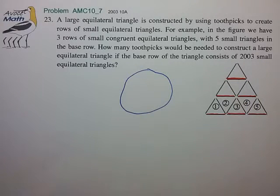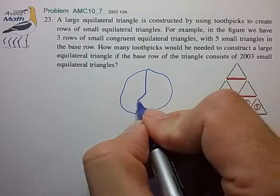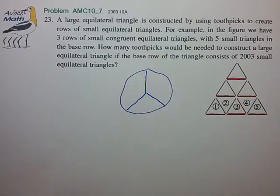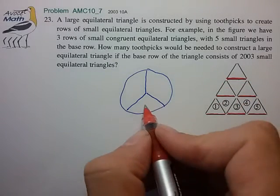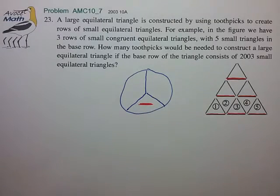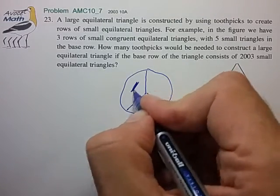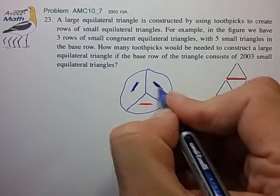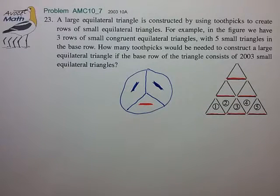So it turns out that this set of all toothpicks is neatly divided into three equal subsets of the toothpicks running horizontally and then also the toothpicks that run in this direction and this direction. And that makes the problem much easier to see and to count.